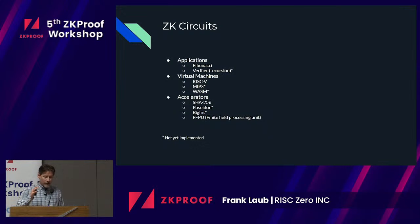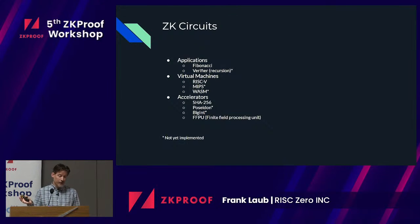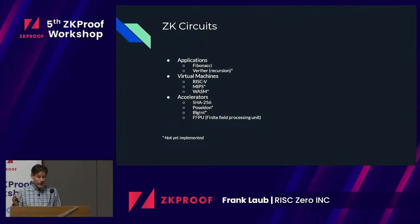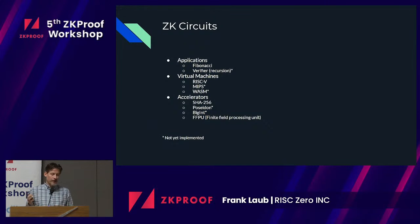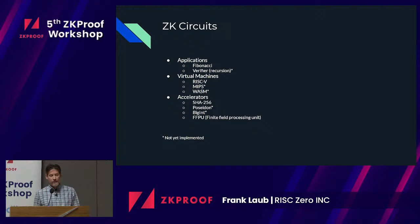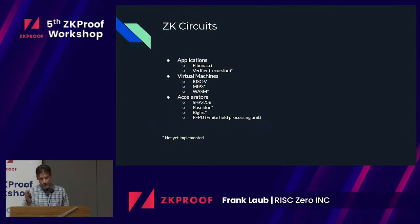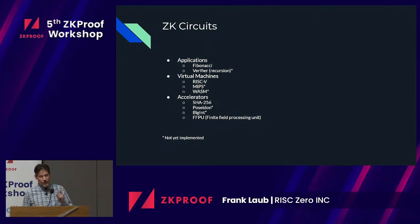These are the three kinds of sets of things we want to build circuits for. Today I'm going to show you an example of the Fibonacci sequence circuit, but we also have a custom circuit for verification so that we can get verifying to run very fast — so recursion. Of course, RISC-V is the main one we've spent most of our time on, but we do plan to perhaps do a MIPS one, maybe WASM someday. There are also different kinds of accelerators — you can think of them as coprocessors that run within the same VM. We're currently working on a Poseidon hash function, a big int coprocessor for elliptic curve type things, lots more cryptographic functions, and of course the FFPU, which is a tiny machine capable of running finite field operations.